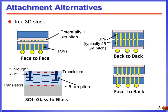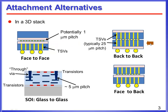Here are some 3D alternatives. One thing I want to emphasise is that when you have a face-to-face interface, you can have micro bumps at a very high density. This gives a very high bandwidth interface between these two face-to-face units. In contrast, if you're doing interconnect through TSVs, or through-silicon vias, you have a coarser pitch, typically about 25 microns, whether it's back-to-back or face-to-back.